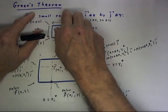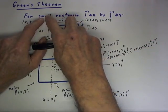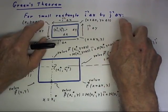Okay, we look at what we call Green's Theorem, and this theorem is going to first apply to a small rectangle, I delta X by J delta Y.